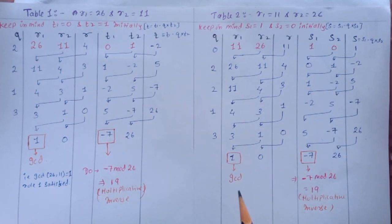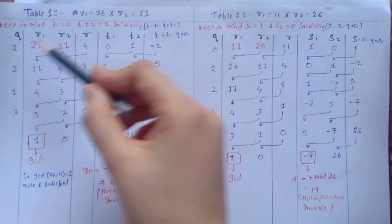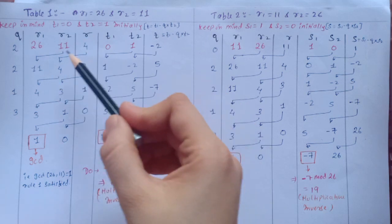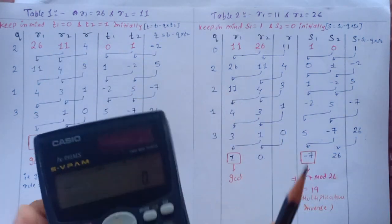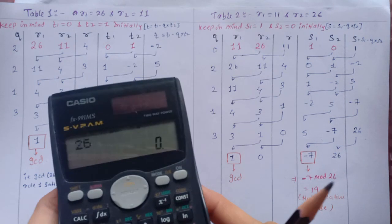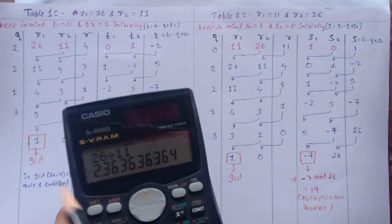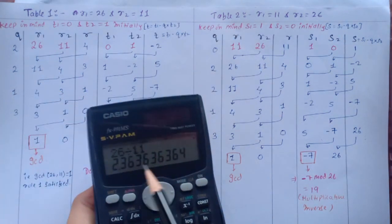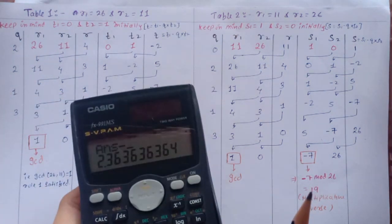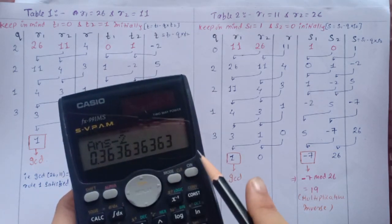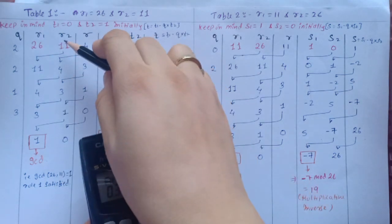For those who haven't seen my earlier video, I will just show a bit how to do Extended Euclidean algorithm. Just keep r1 here, r2 here. This is the quotient and this is remainder. So we divide 26 by 11. Whatever we get to the left side of this is a quotient, so we write 2 in the quotient. And we subtract 2 from the answer in calculator. Whatever decimal number we get, we multiply it with r2, that is this 11, so multiplied by 11 we get the remainder.